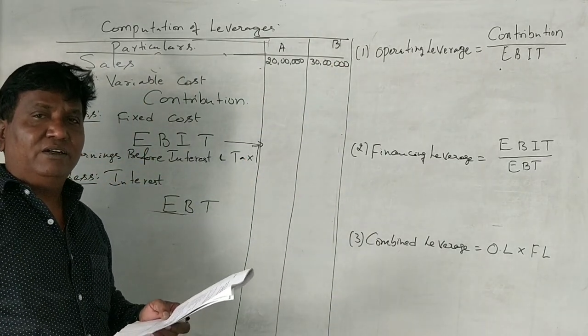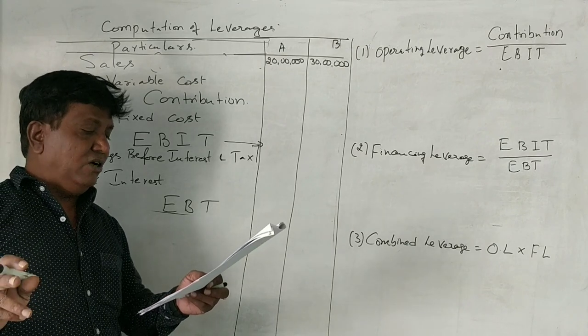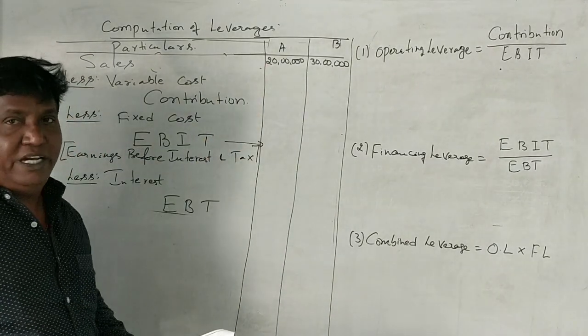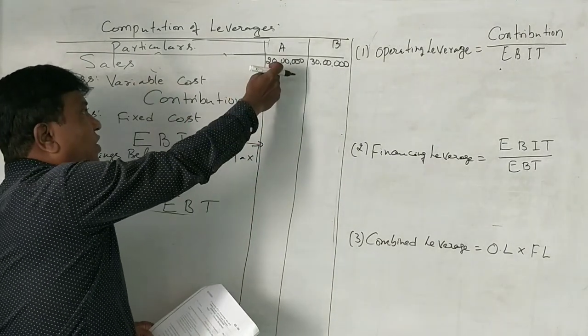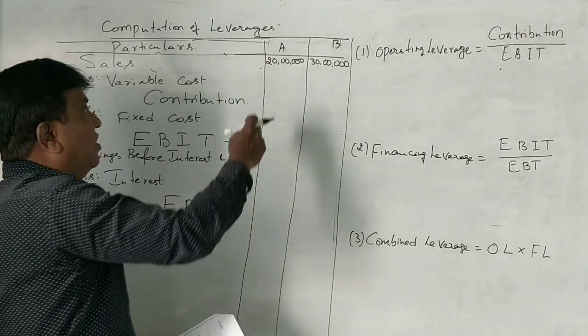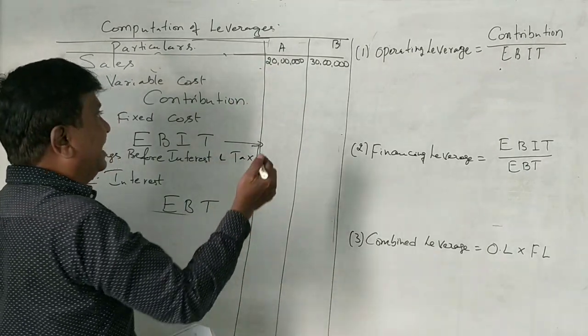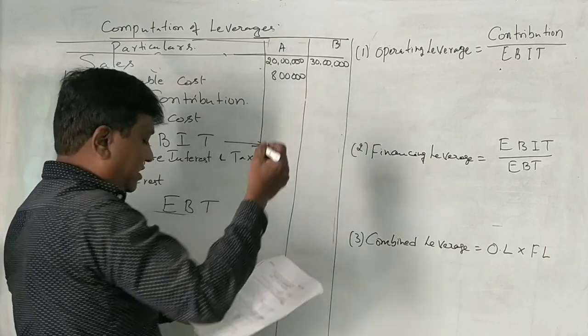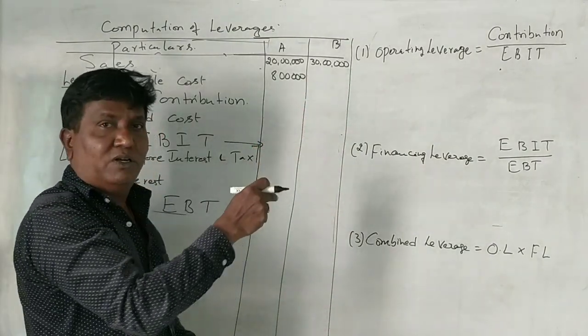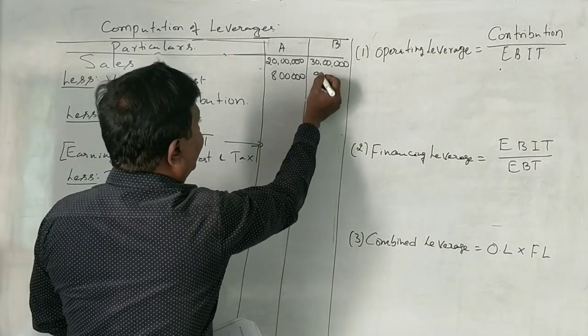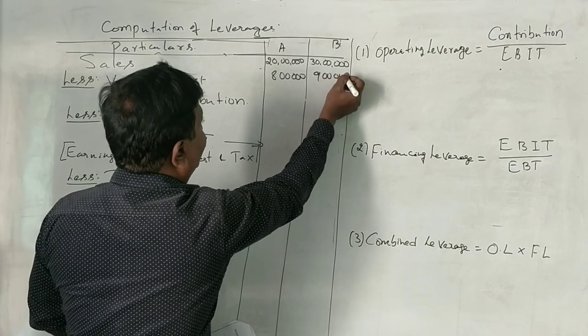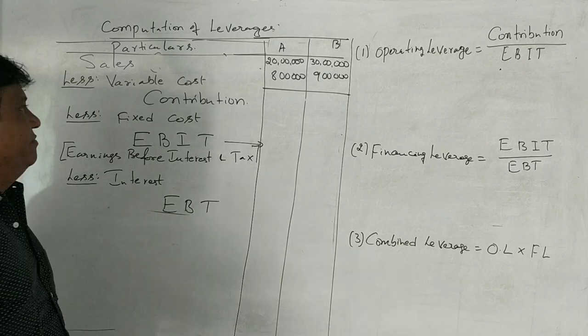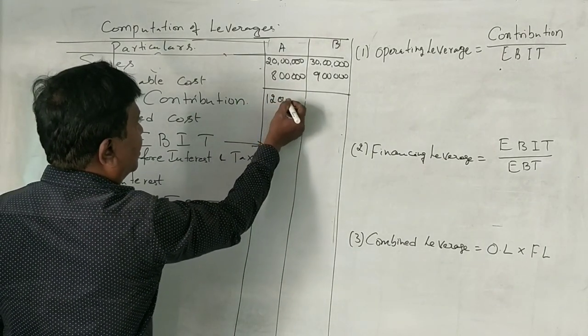What is the variable cost is given? 40% of sales. See in case of A, variable cost is 40% of the sales means on 20 lakhs 40% is 8 lakhs and 30% of sales on B will be variable cost, so that will be 9 lakhs. Now we got the variable cost. If you do that, you get 12 lakhs as contribution.